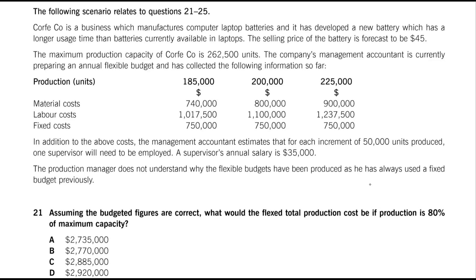As always, let's start with reading the question rather than the case scenario, so we know exactly what information we need to pick out. The first question says: assuming the budgeted figures are correct, what would the flexed total production cost be if production is 80% of maximum capacity? So, let's read the case scenario. Corfeco is a business which manufactures computer and laptop batteries, and it has developed a new battery which has a longer usage than batteries currently available in laptops. The selling price of the battery is forecast to be $45. The maximum production capacity of Corfeco is 262,500 units.